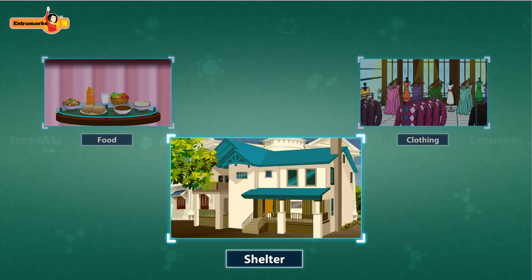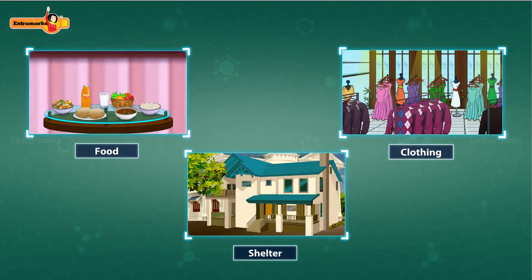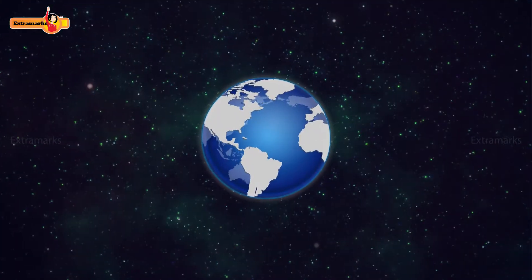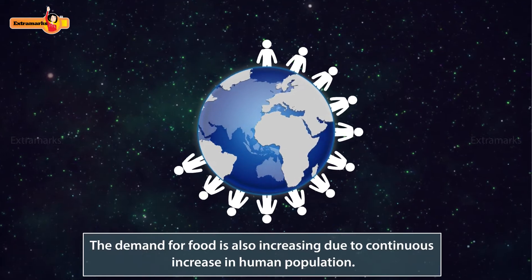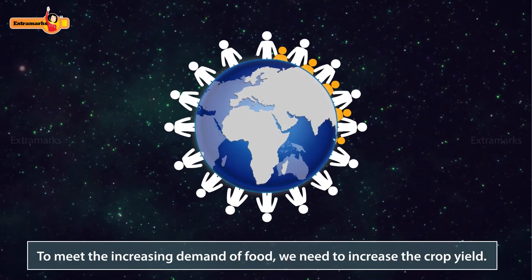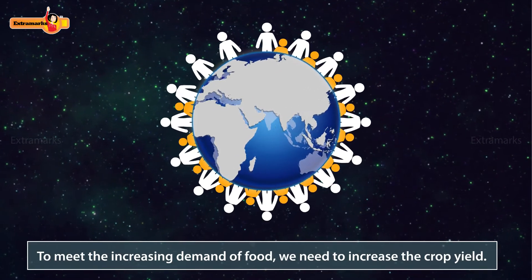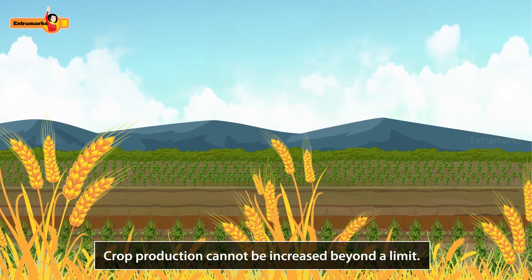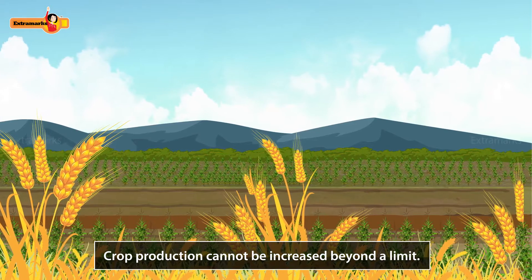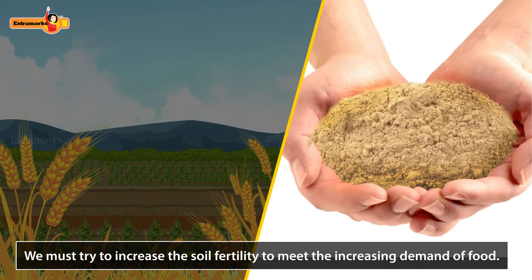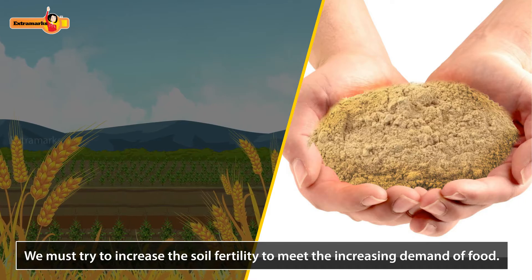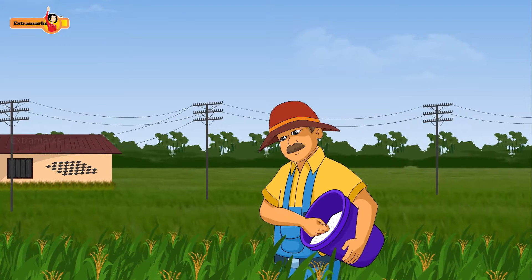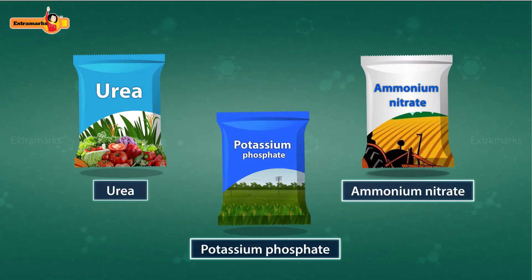Food, shelter, and clothing are the basic needs of all of us. Due to continuous increase in human population, the demand for food is also increasing. To meet the increasing demand for food, we need to increase the crop yield. Since the land available for crop production cannot be increased beyond a limit, we must try to increase the soil fertility to meet the increasing demand of food.